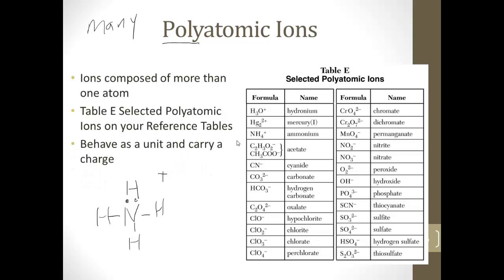Now, these polyatomic ions behave as a unit. The bonds within that polyatomic ion are all covalent. So this nitrogen is covalently bonded to these hydrogens, but the whole thing behaves as one ion.